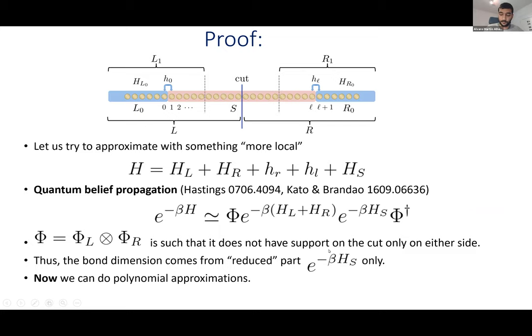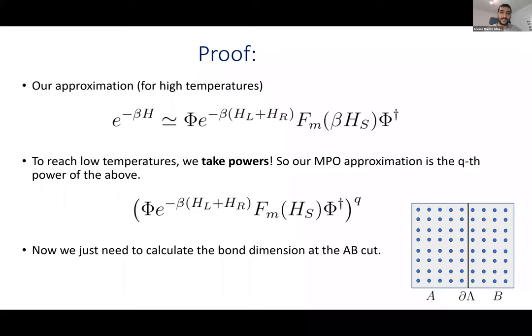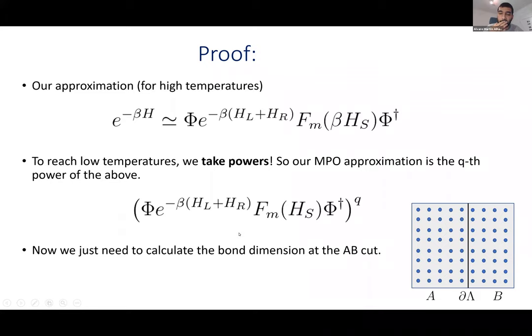So we have the MPO we care about as a polynomial approximation of degree M to the relevant part of the Hamiltonian. The smaller M is, the larger the error but the smaller the bond dimension — a trade-off. This works for high temperatures. To go to low temperatures, we simply take powers of this approximation, which decreases the temperature. This gives us the approximation for the thermal state at arbitrary temperatures.